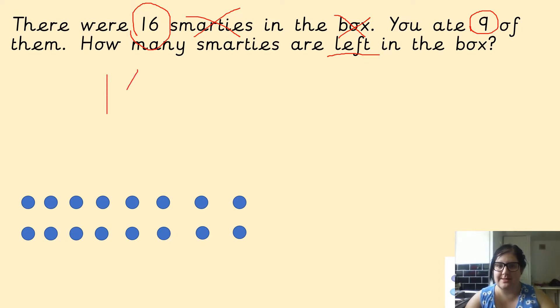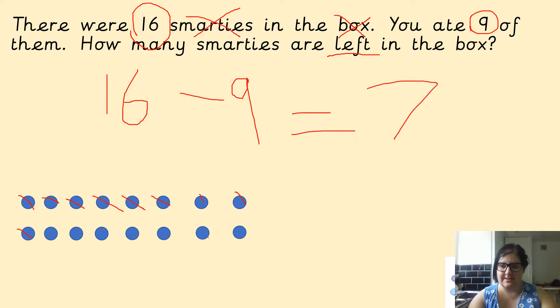So you are working out 16 take away 9 and you need to find the total. So I've got 16 circles down here. If I cross off 9, 1, 2, 3, 4, 5, 6, 7, 8, 9. I've got 1, 2, 3, 4, 5, 6, 7 left over. So the answer is 7.